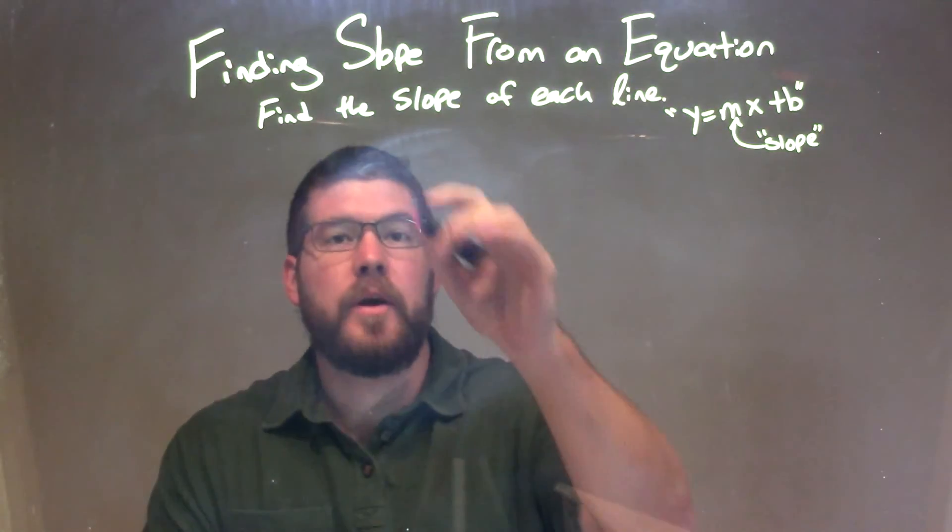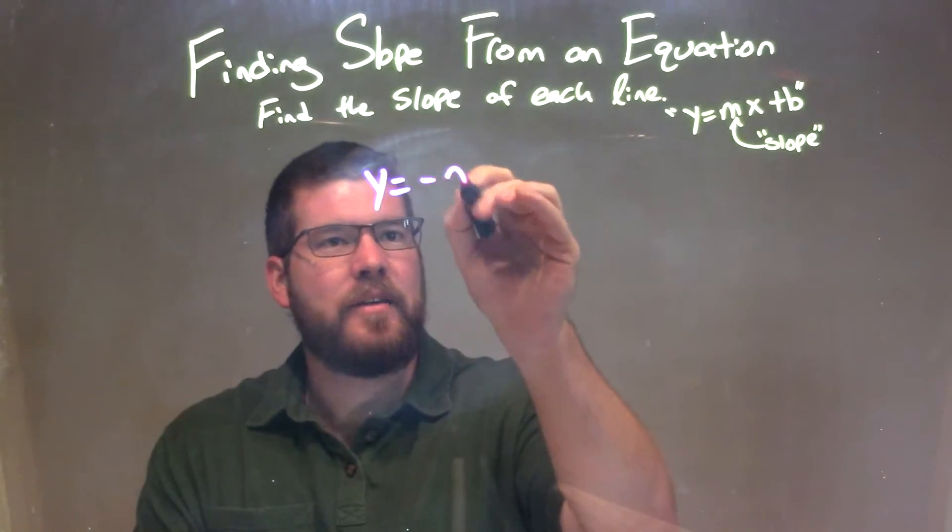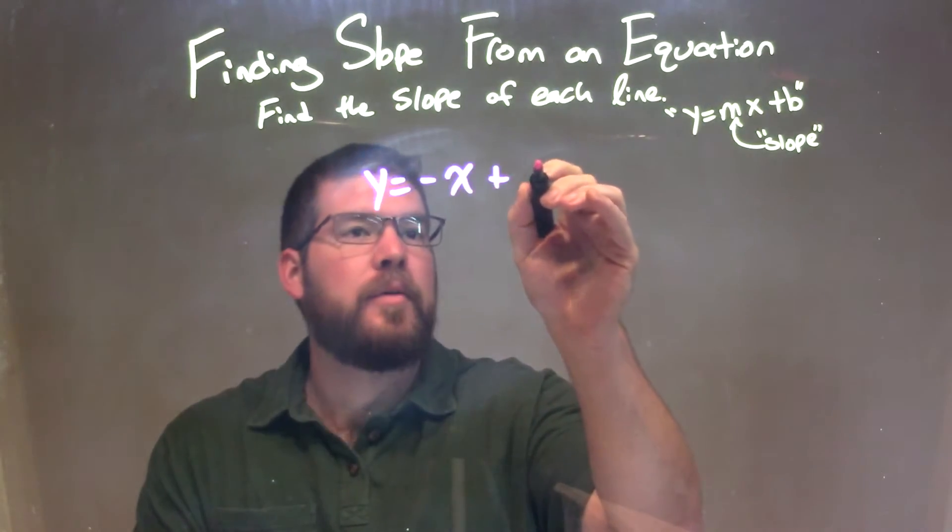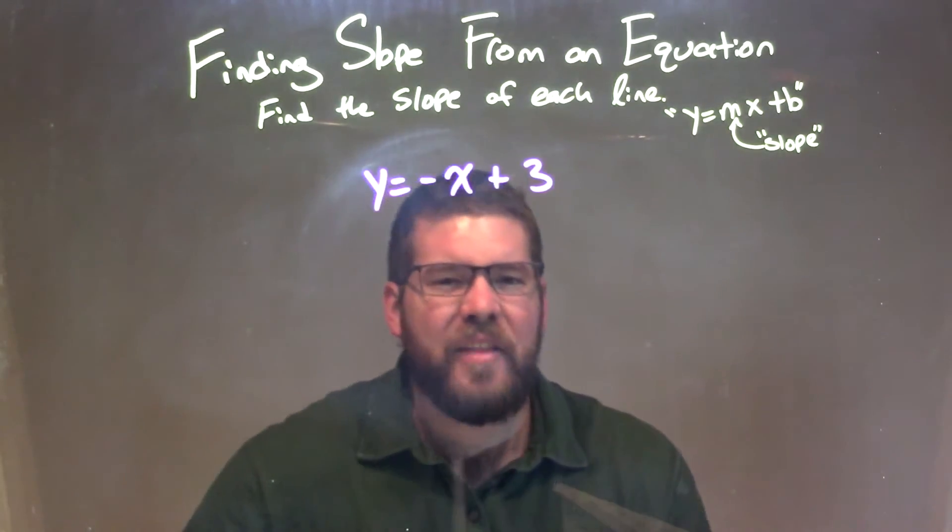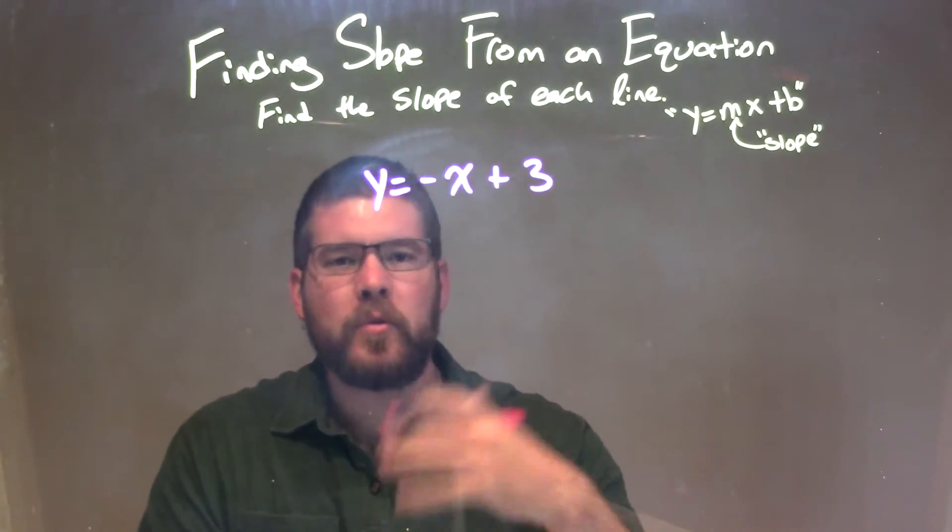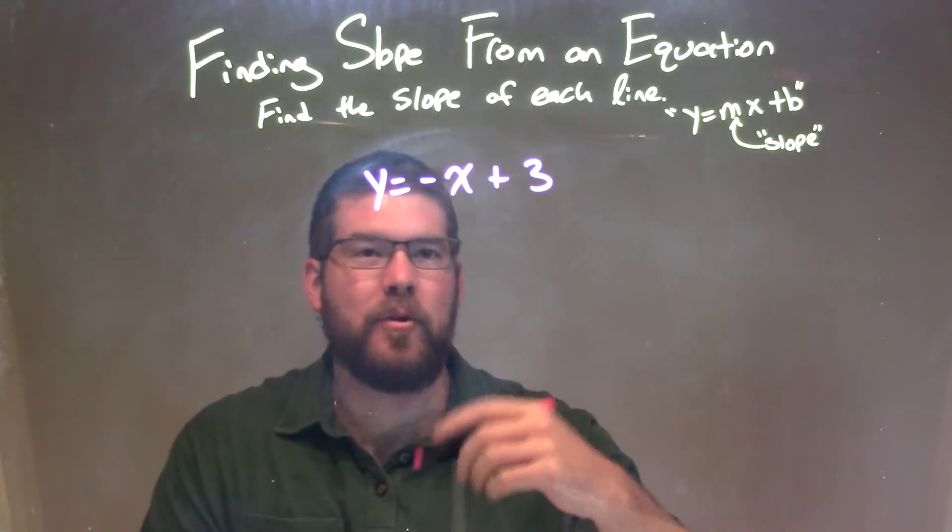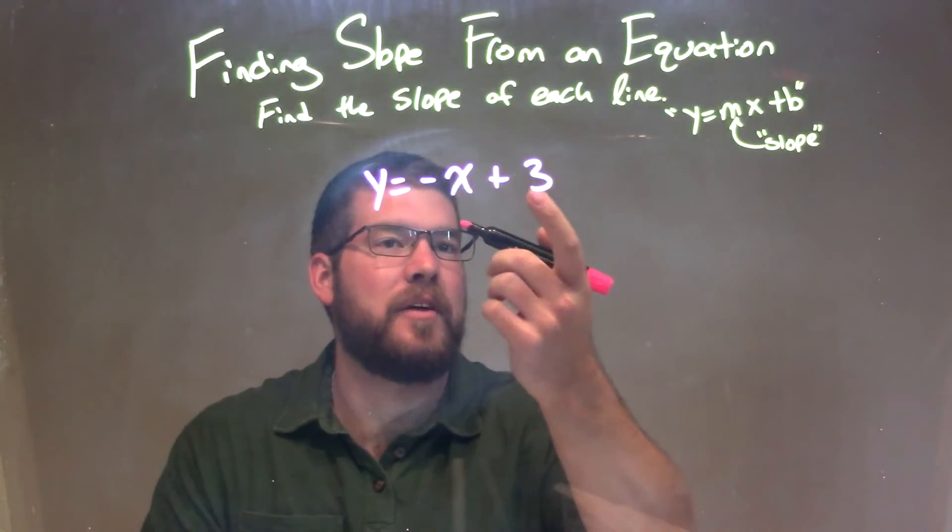So if I was given this equation, y equals negative x plus 3, this one's semi-tricky here. We first want to see if we can get it into our slope-intercept form, and it is. It's our y equals mx plus b.